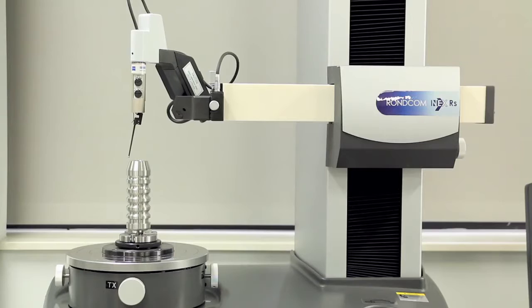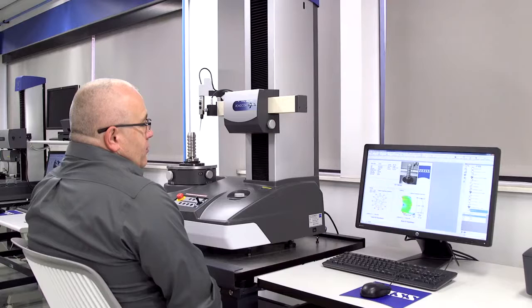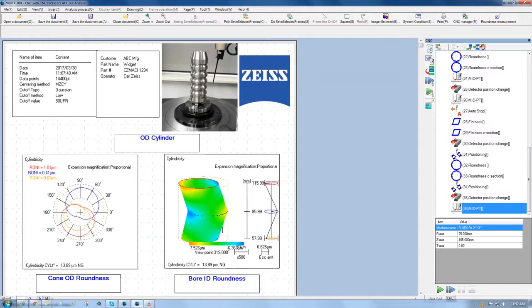From here we will move back to a safe position, load unload position for the operator to be able to load the next workpiece. Upon completion of our measurement process in the CNC program that we have selected, the report is automatically generated.